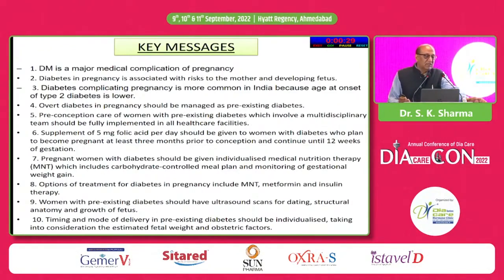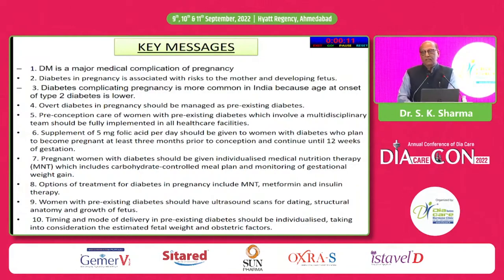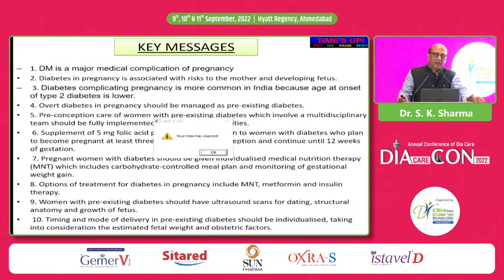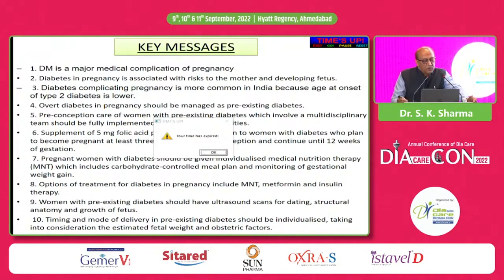Key messages: diabetes is a major medical complication of pregnancy, associated with risks to both the mother and the developing fetus. Diabetes complicating pregnancy is more common in India because the age of onset of diabetes is younger while pregnancies are occurring at a later age. Overt diabetes in pregnancy should be managed as pre-existing diabetes. Pre-conceptional care is required, with folic acid supplementation. Management of medical nutrition therapy should be individualized with very good glycemic control. Women with pre-existing diabetes should have frequent ultrasound scans, and timing and mode of delivery are very important pointers to consider. Thank you very much.